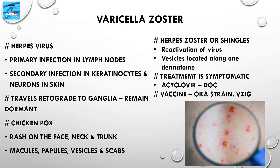Chickenpox is characterized by rashes on the face, neck, and trunk that are macules, papules, vesicles, and scabs. Herpes zoster or shingles is caused by reactivation of the virus, with vesicles located along one dermatome. Treatment is usually symptomatic and acyclovir is the drug of choice. The vaccine is a live attenuated vaccine using the Oka strain of Varicella Zoster Virus, and Varicella Zoster Immunoglobulin is also available.